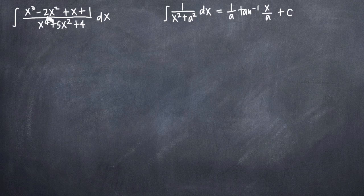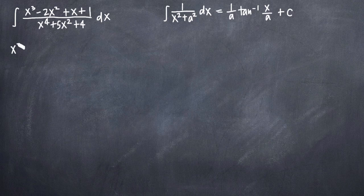If it weren't true — for example, if we had x to the fourth in the numerator and x cubed in the denominator — we'd need to use polynomial long division to simplify our rational function. But in this case, we can go ahead and move on to the next step, which will be to factor the denominator of our rational function as completely as possible.